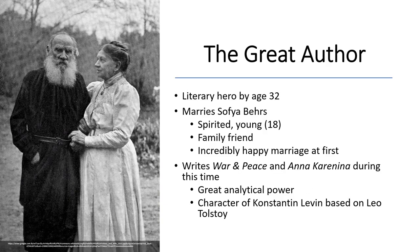Tolstoy is very famous today in large part because he gains great literary significance during his lifetime. By the age of 32, he is a literary hero in Russia — people read and love his works. In the midst of this, he marries Sophia Bears, a spirited young woman and family friend. Their marriage is described as incredibly happy, at least for the first 15 years, in large part because Sophia is very encouraging of Tolstoy's works and helps him in his writing — essentially encouraging his literary genius. It's during this time that he completes War and Peace and also writes Anna Karenina.